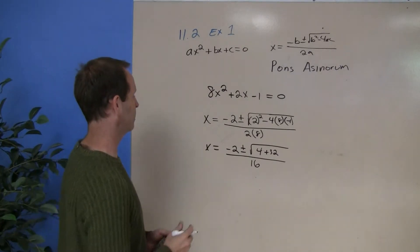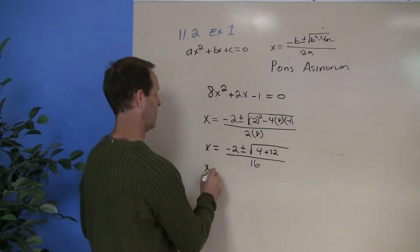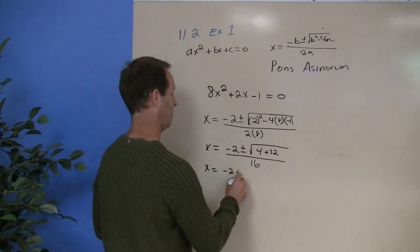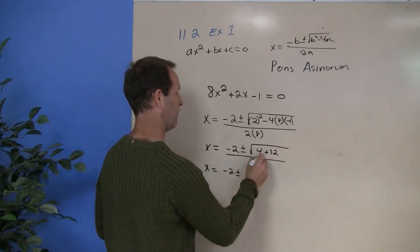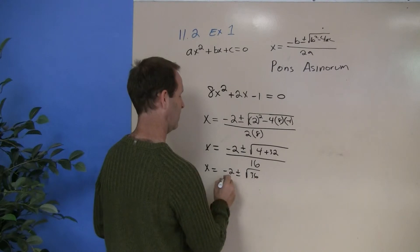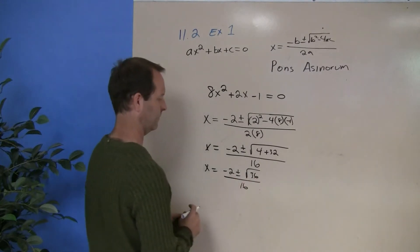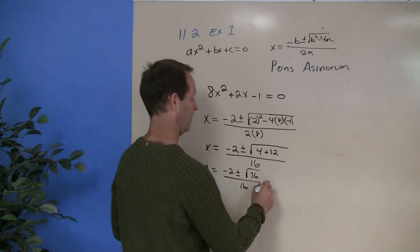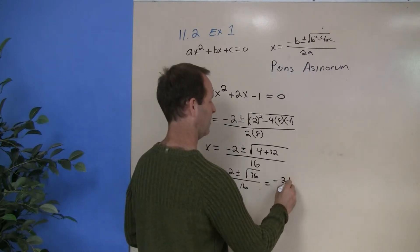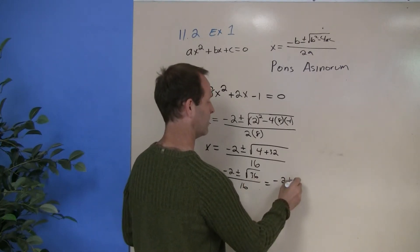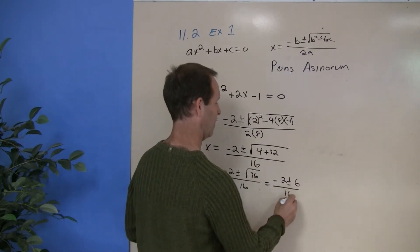Yep, looks right. Okay, x equals negative 2, plus or minus the square root of 36, all over 16, equals minus 2, plus or minus the square root of 36 is a 6, all over 16.